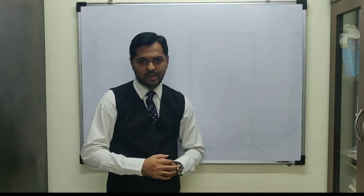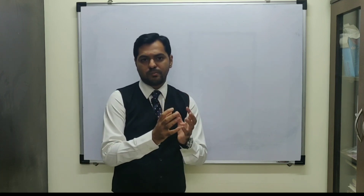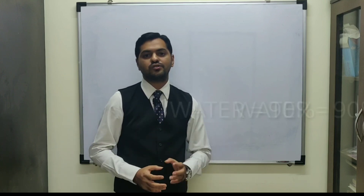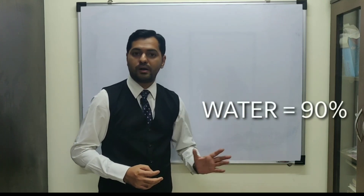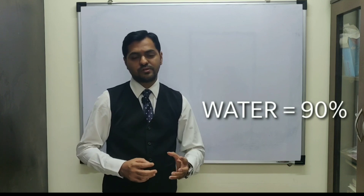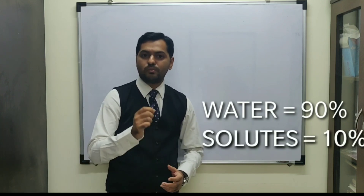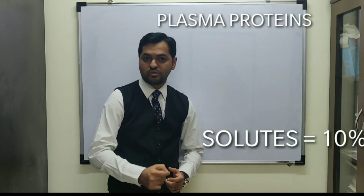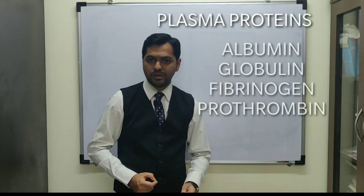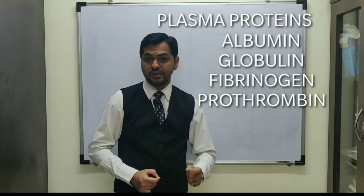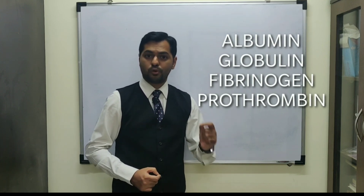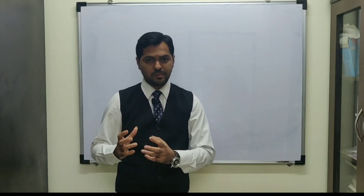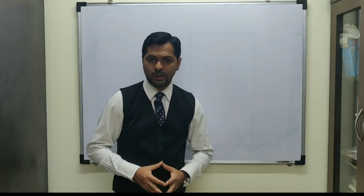Of the 55% plasma composition, 90% consists of water. The remaining 10% contains solutes, and the most important are the plasma proteins — serum albumin, serum globulin, serum fibrinogen, and serum prothrombin. These plasma proteins will be discussed in detail in another segment.